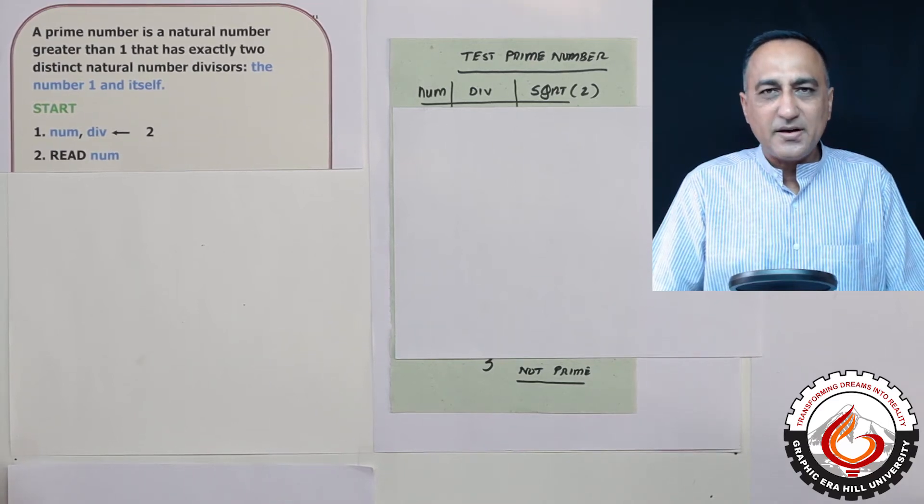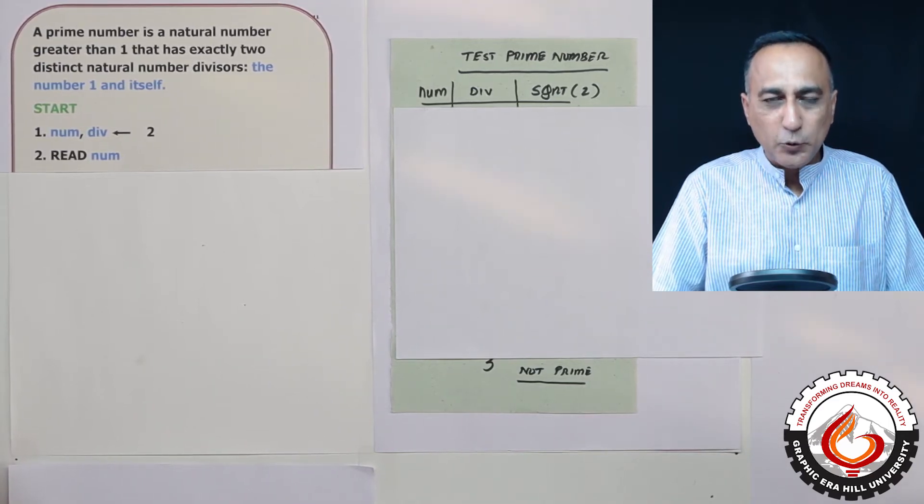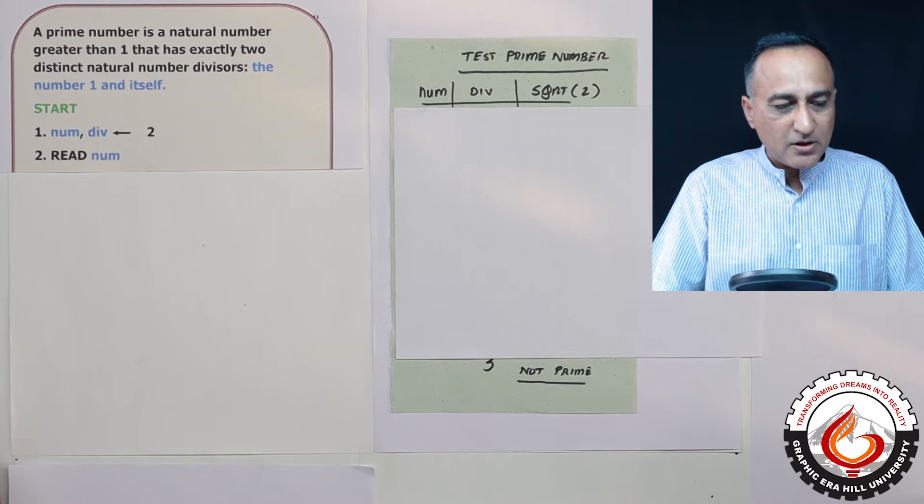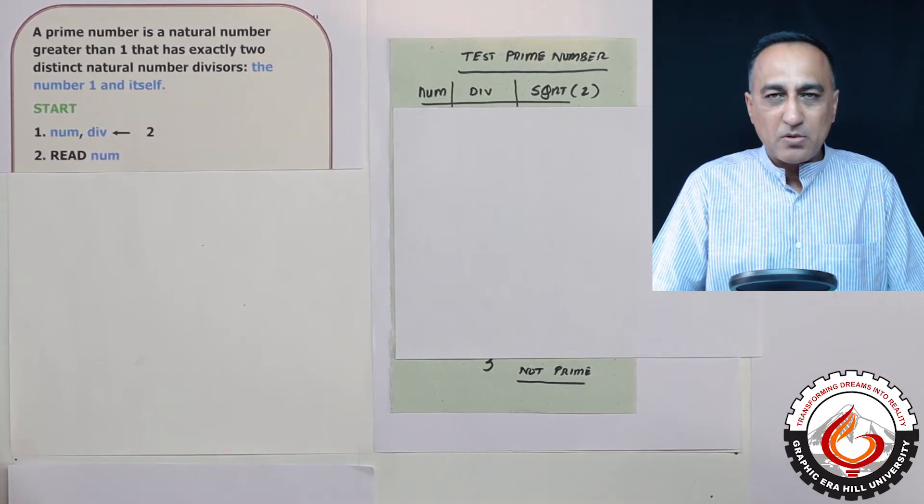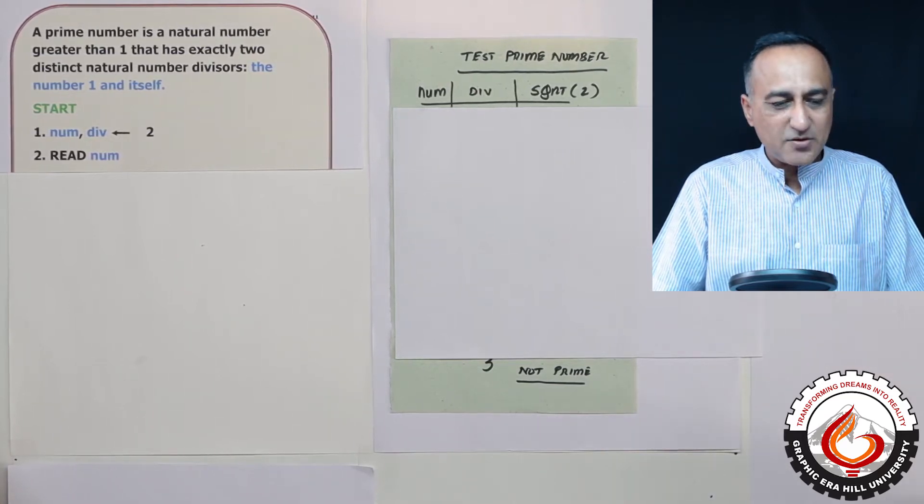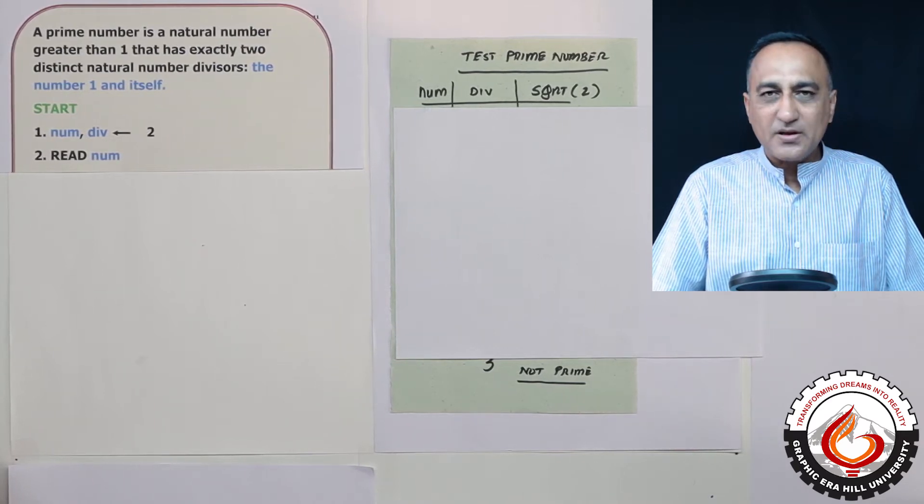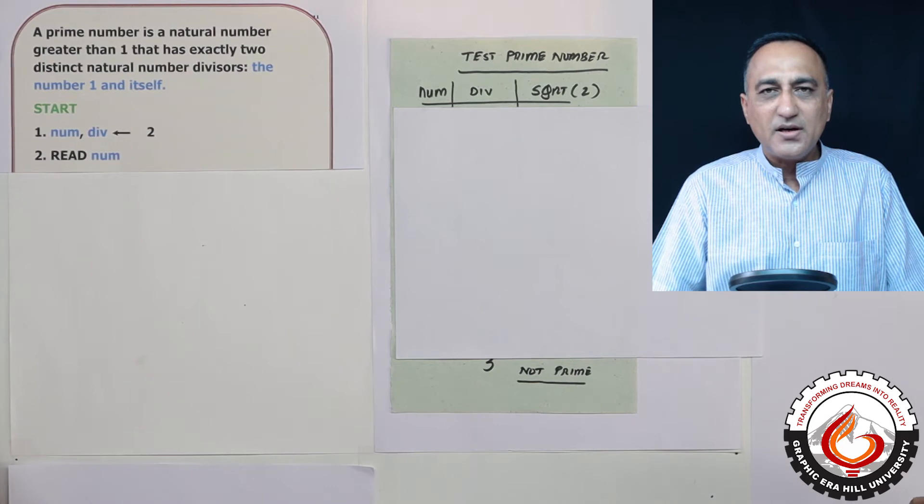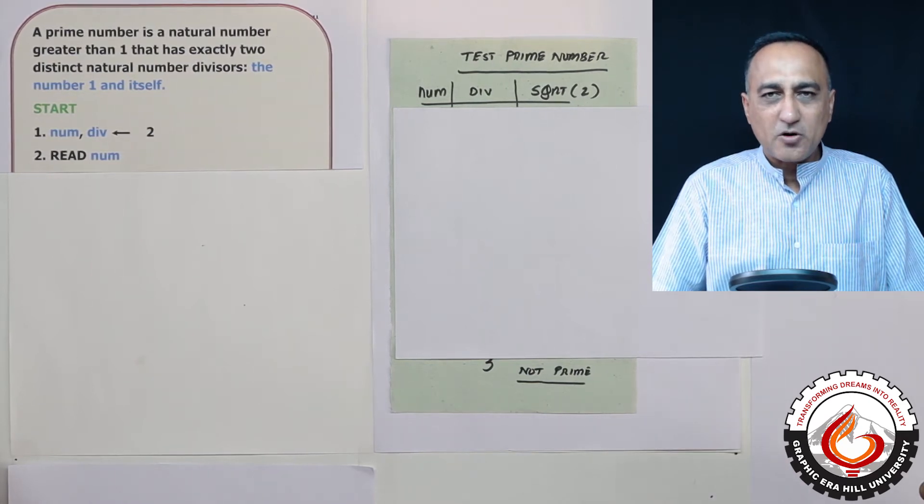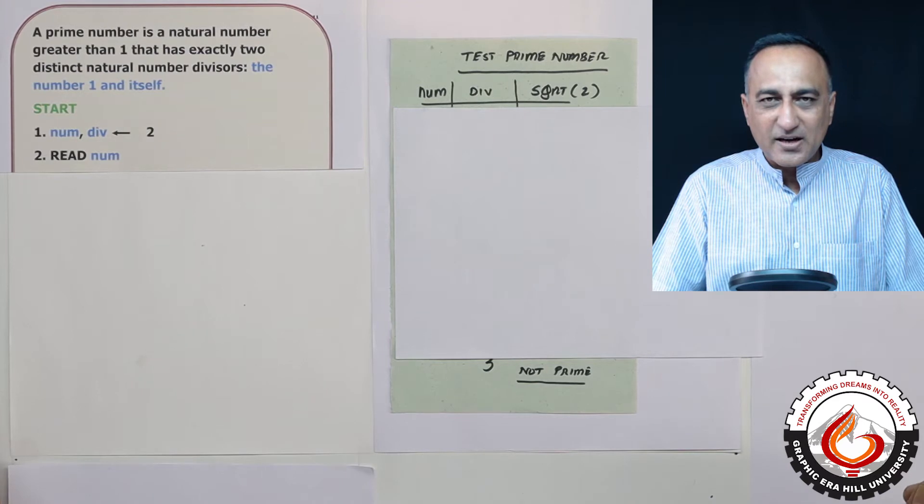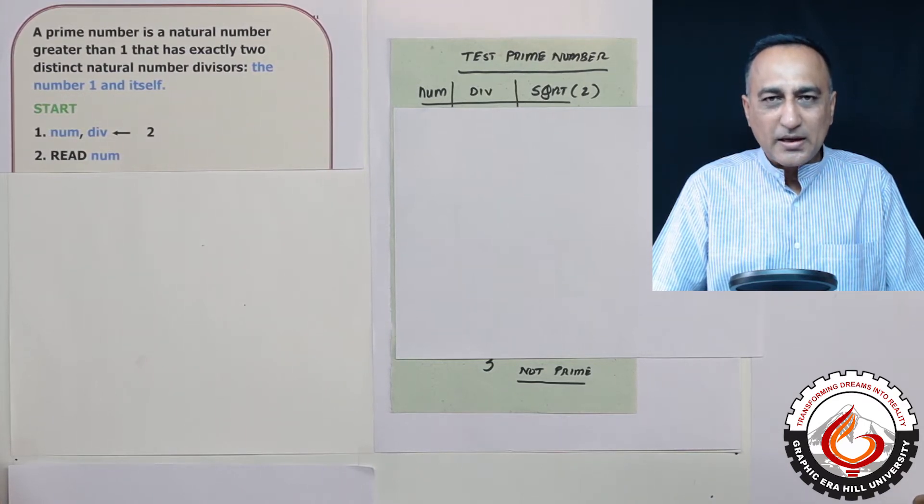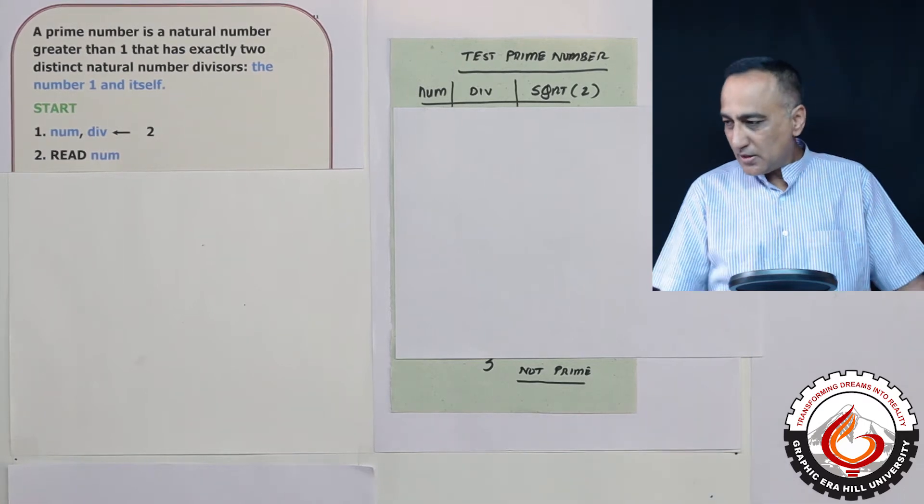This is the last assignment for the looping problems. What this particular problem is asking us to do is, given a natural number greater than one or given any natural number, tell us whether that number is a prime number or not.